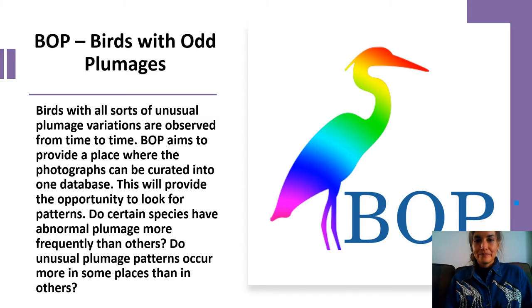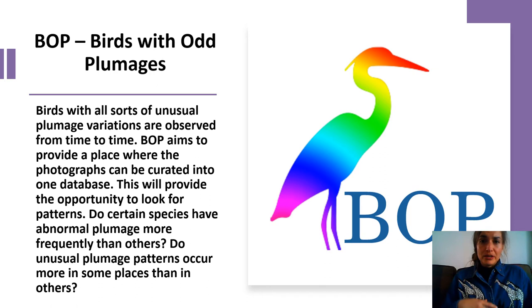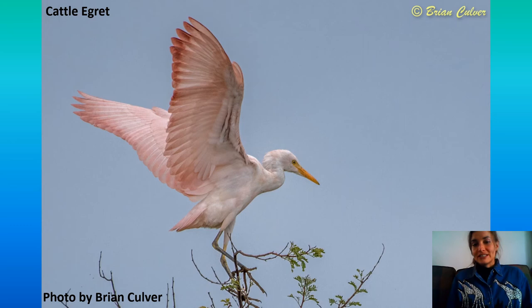Then we've got BOP, which is Birds with Odd Plumages. Birds with all sorts of unusual plumage variations are observed from time to time, and BOP aims to provide a place where photographs can be curated into one database. This will provide the opportunity to look for patterns — do certain species have abnormal plumages more frequently than others, and are there areas in Africa where these unusual plumage patterns pop up more frequently? Here's a great example of a very pink cattle egret, photographed by Brian Culver.